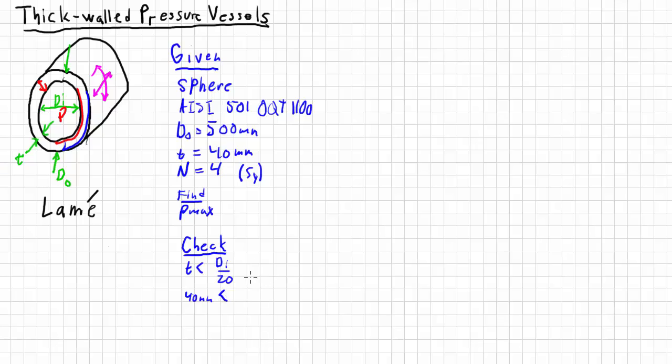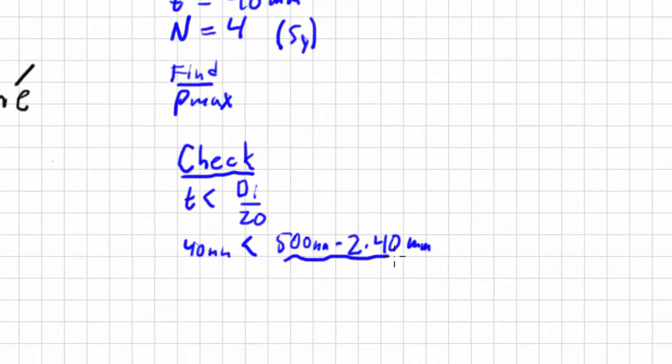I need that to be less than 500 millimeters, which is the outer diameter. We've got to find the inner diameter. I have to subtract twice the wall thickness, so twice 40 millimeters, and then divide all that by 20. I end up with 40 millimeters is less than 4.1 millimeters. And guess what? That is not true. So that means it's not thin.